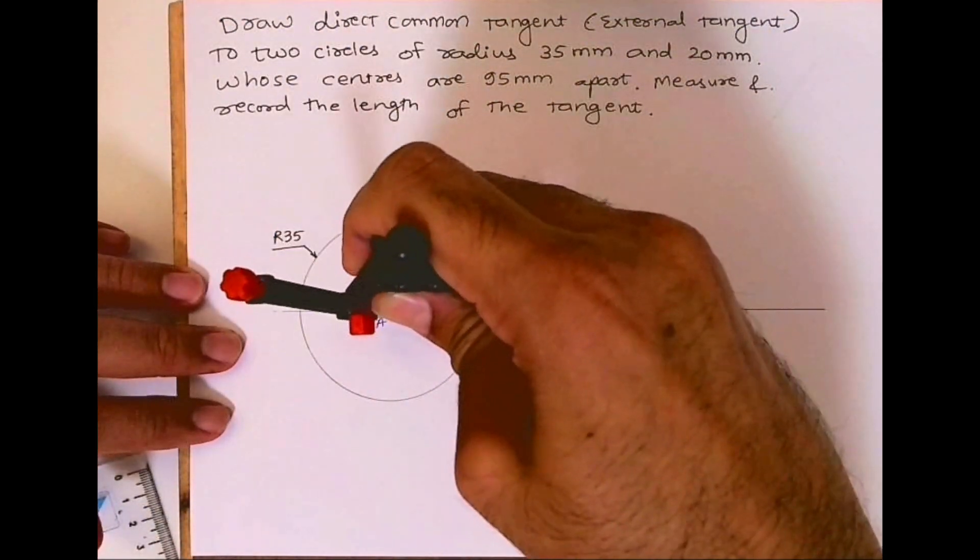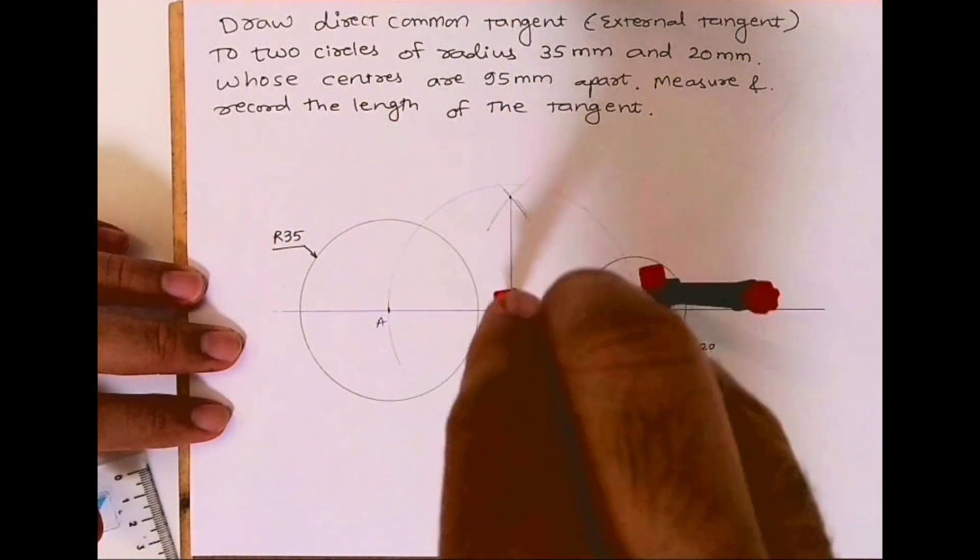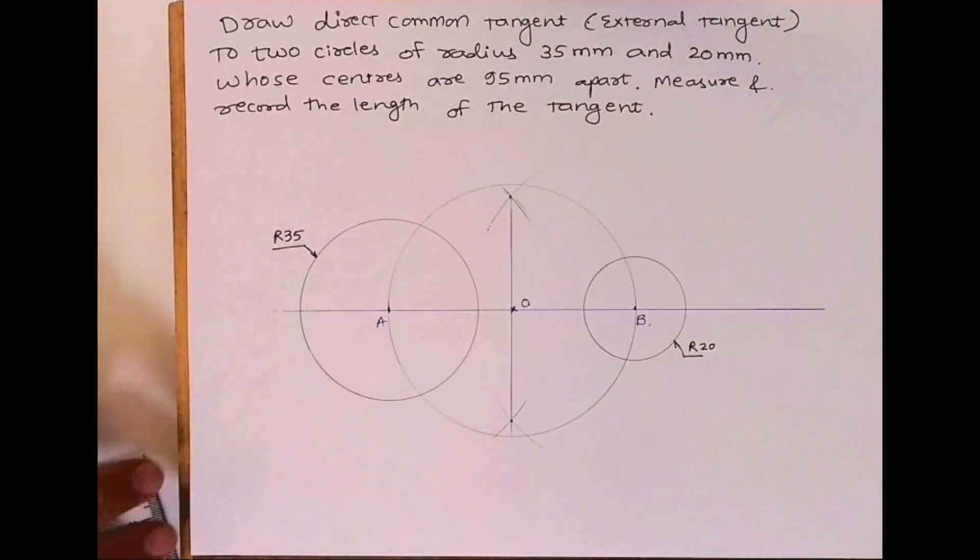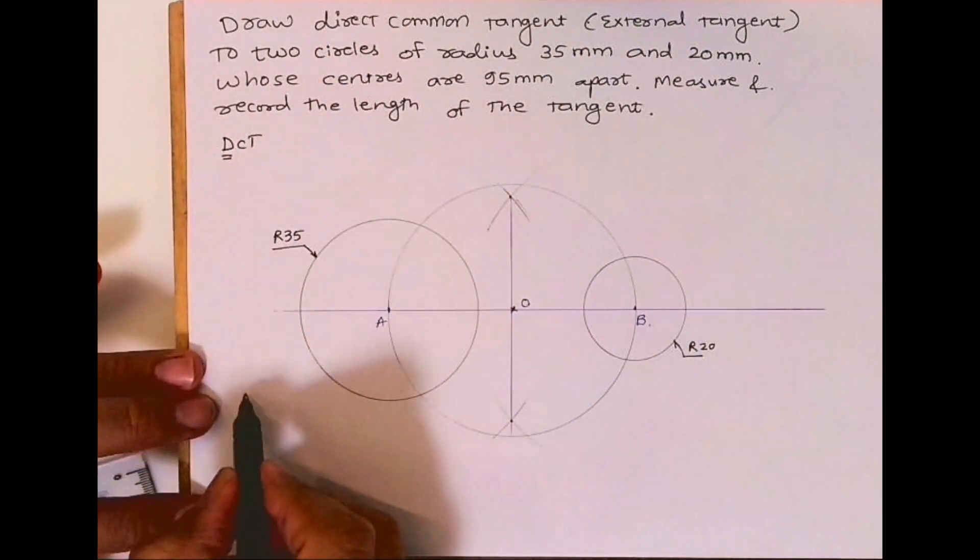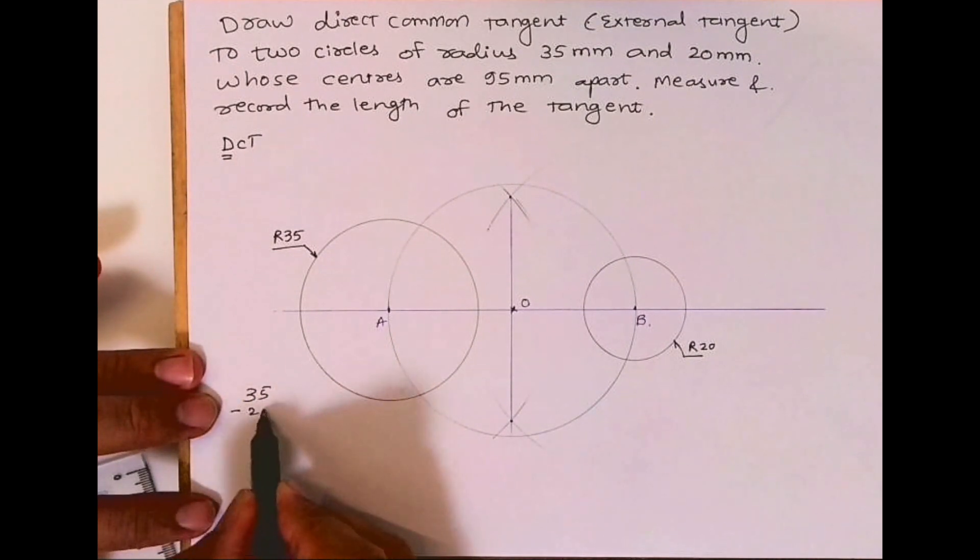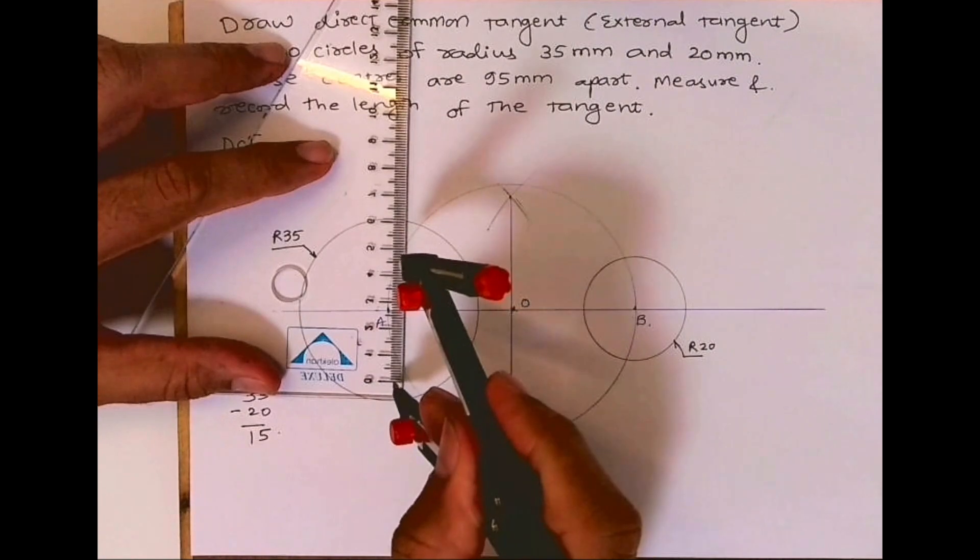Now DCT - I will remember D as deduct. So 35 minus 20 would be 15. I'll take a radius 15 in my compass, and from here I will draw radius 15.